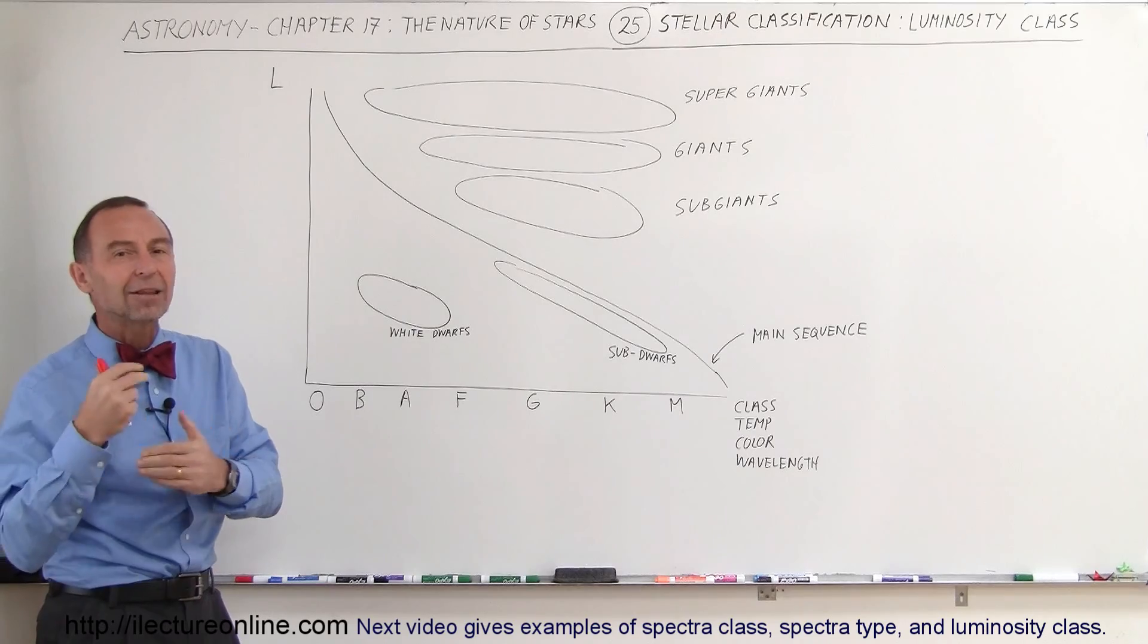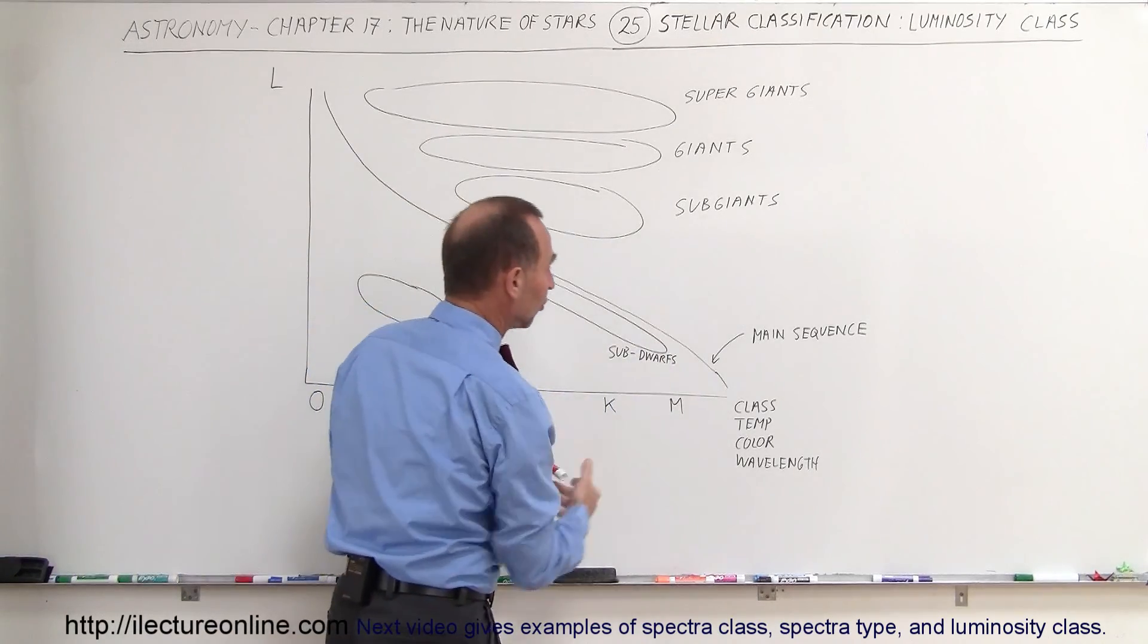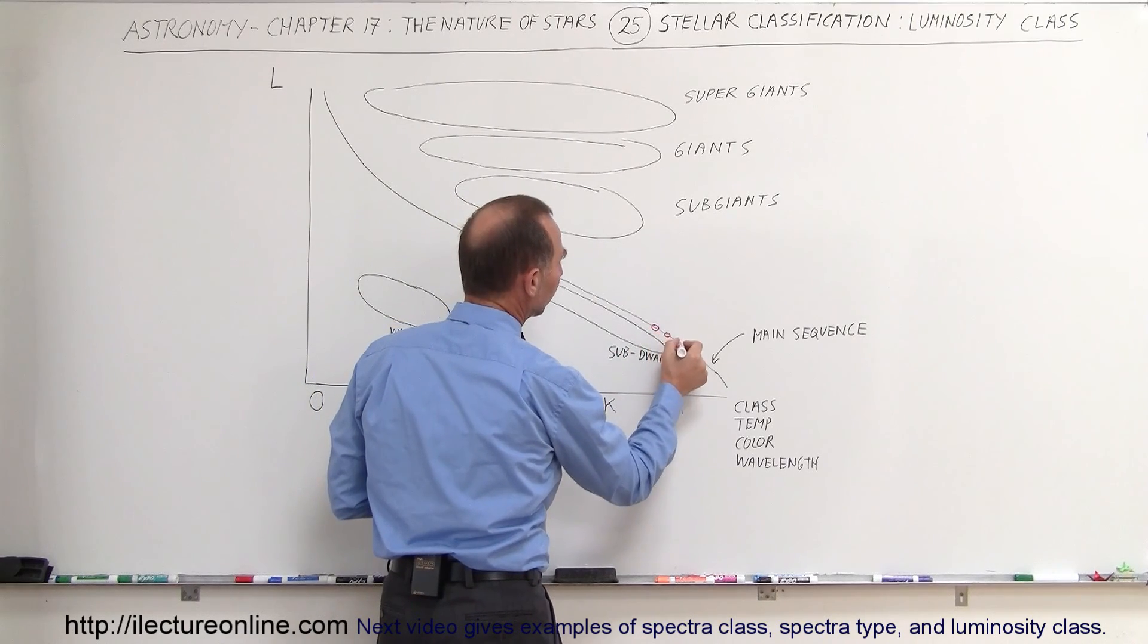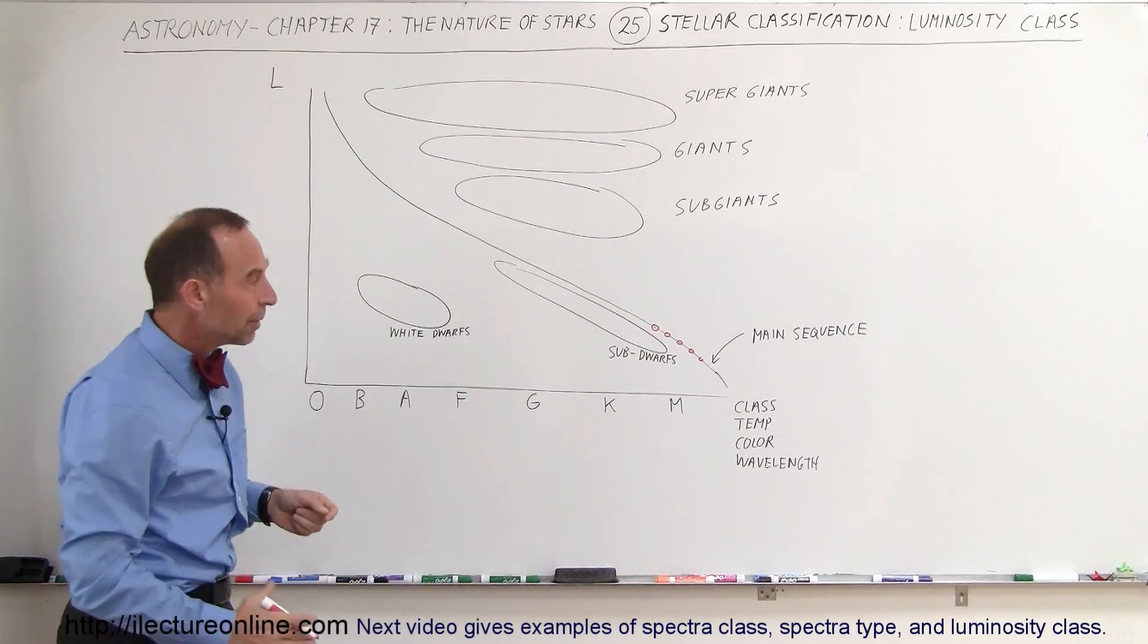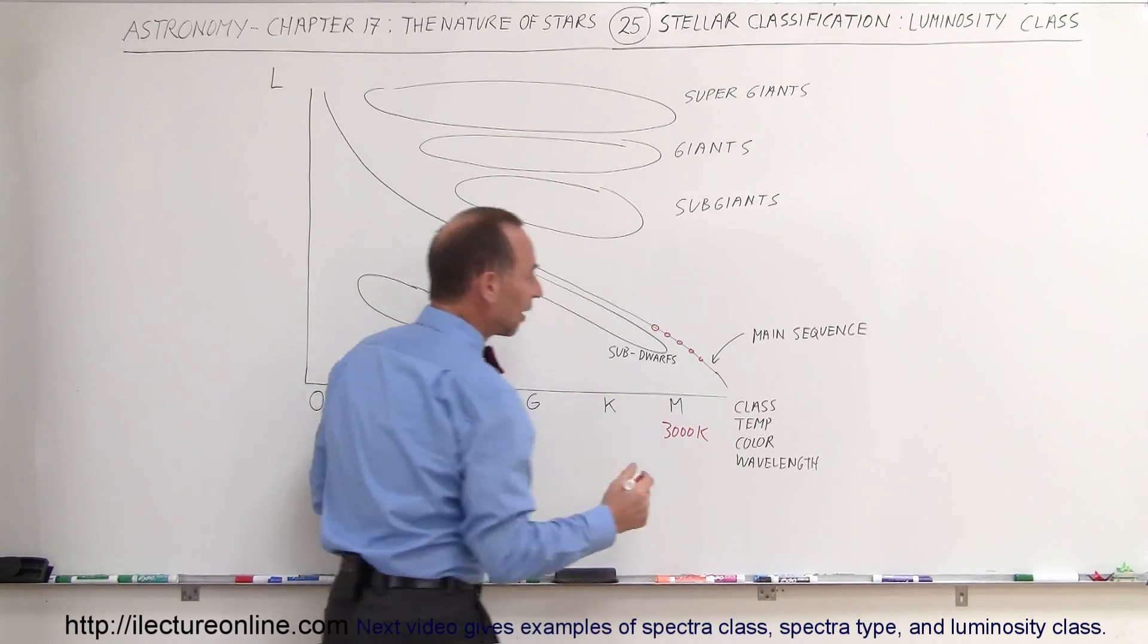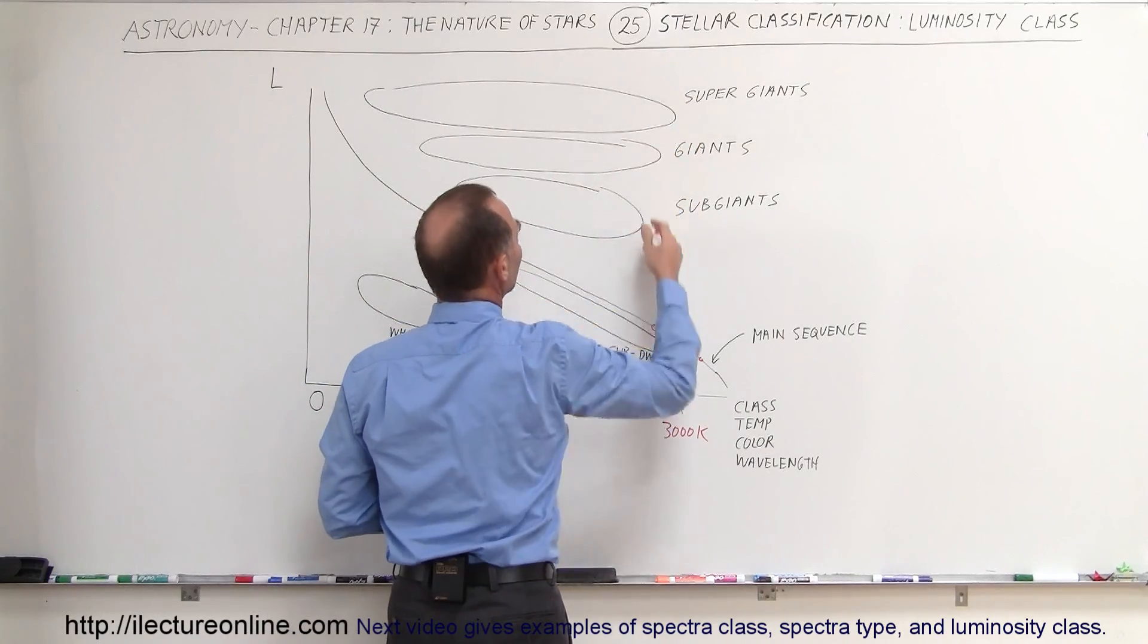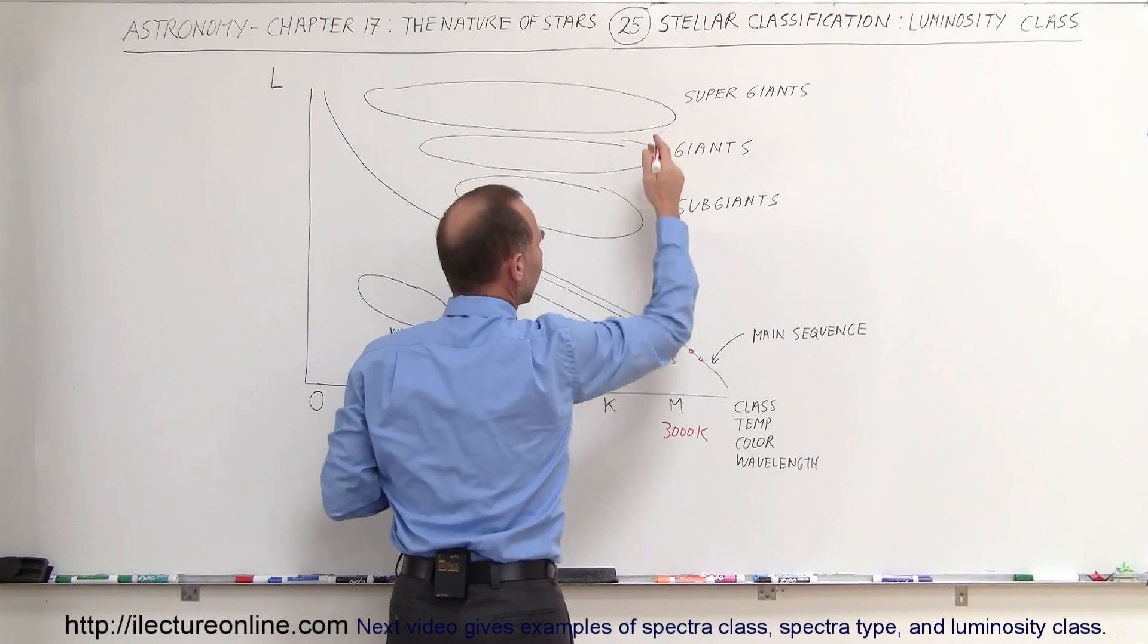For example, if you look at the M class stars, we know that these typically are very small reddish-looking stars. They become smaller and smaller as you go down on the main sequence. But then with the same surface temperature of roughly 3,000 Kelvin, we noticed that there were some other stars that were up in these regions right here. They were very luminous.